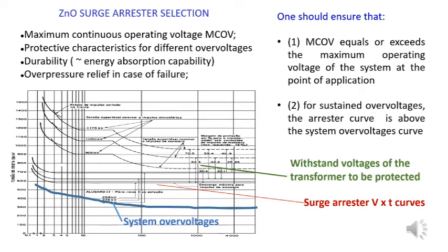Taking a look at this figure, in the left bottom side, we show in a stylized way the curves representing the overvoltages which occur in the system — the long duration and short duration ones. Let's suppose that we did an insulation coordination study and detected the levels of lightning impulse, surge impulse, and temporary overvoltage. For each value of overvoltage, we checked the corresponding duration and constructed a curve similar to the blue one shown.